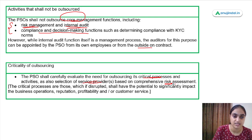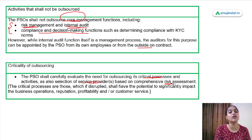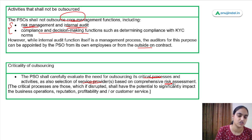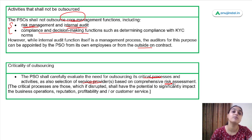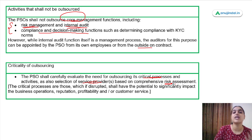PSOs should carefully evaluate the need to outsource critical processes and activities, and also the selection of service providers based on risk assessment. Critical processes are ones that can have a major impact on your business, reputation, or profitability. PSOs outsource because a third party service provider might be more efficient, able to provide the same service at lower cost and better quality, allowing the PSO to focus on core functions.